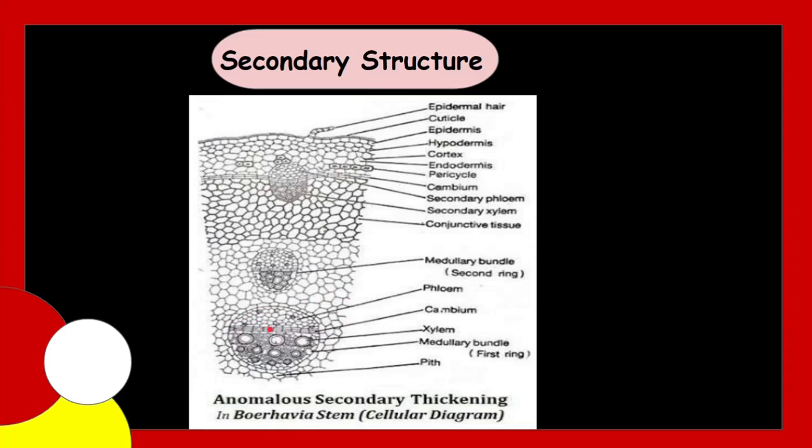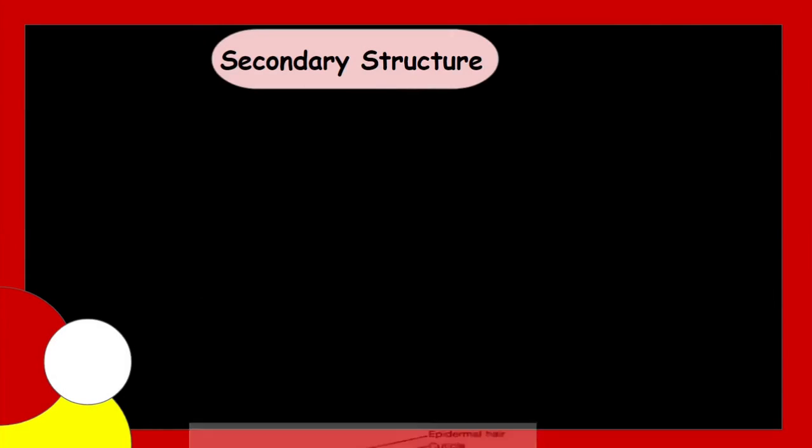This was all about the abnormal secondary growth or anomalous secondary growth in Boerhavia. Boerhavia is dicot, it is included in dicot and having dicot stem. Clear students, so from diagram, it was clear that there occurs about four or five concentric rings after the secondary formation or cambium activities. So, there we studied about the abnormal or anomalous secondary growth in dicot stem and we have the example of Boerhavia.